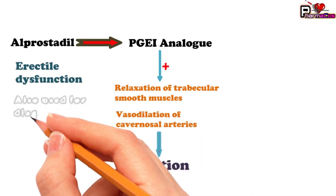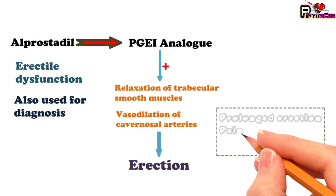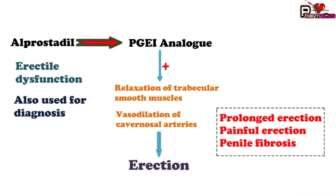When alprostadil is used for erectile dysfunction, it produces side effects like prolonged erection of the penis, painful erection, and penile fibrosis. Alprostadil can also be used in newborns who suffer from patent ductus arteriosus — a condition where the ductus arteriosus is not closed after birth, resulting in leakage of oxygenated blood from the left ventricle into the pulmonary circulation, causing increased pressure in the pulmonary system. Before surgical correction, alprostadil can be given as it acts as a vasodilator, thereby reducing pulmonary pressure.